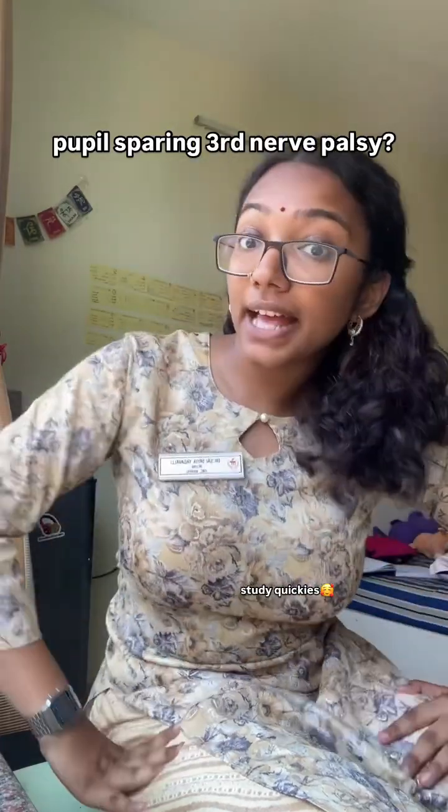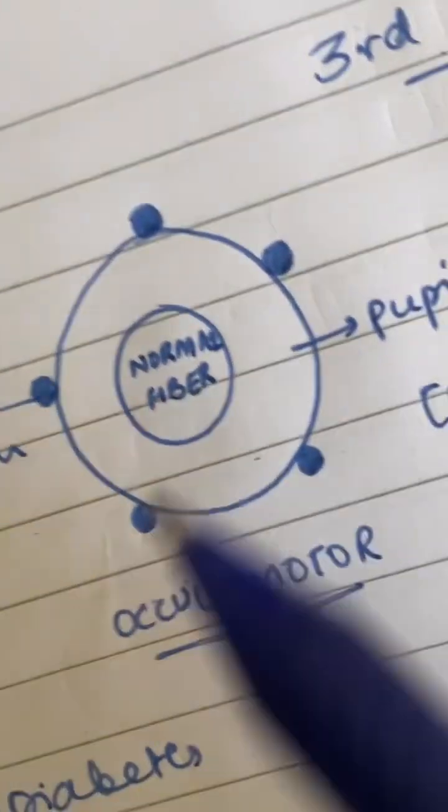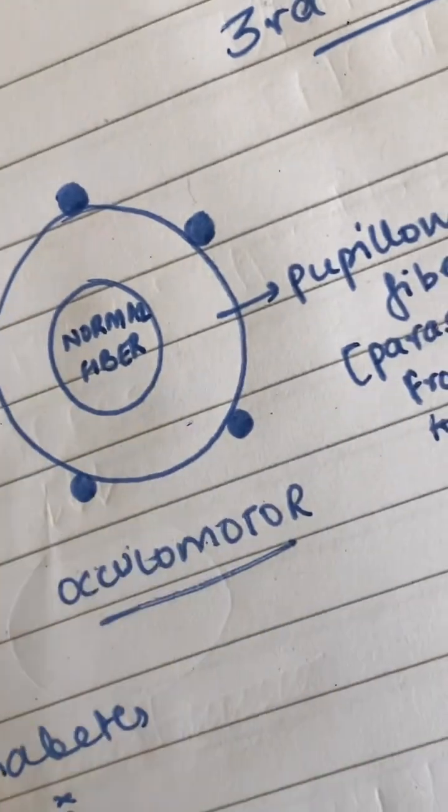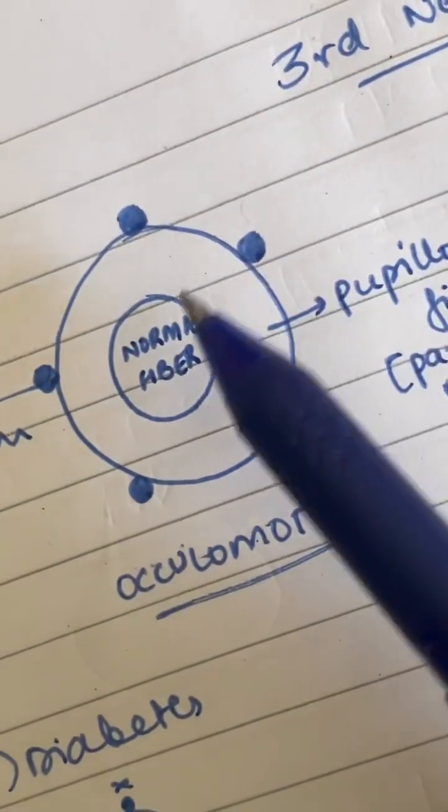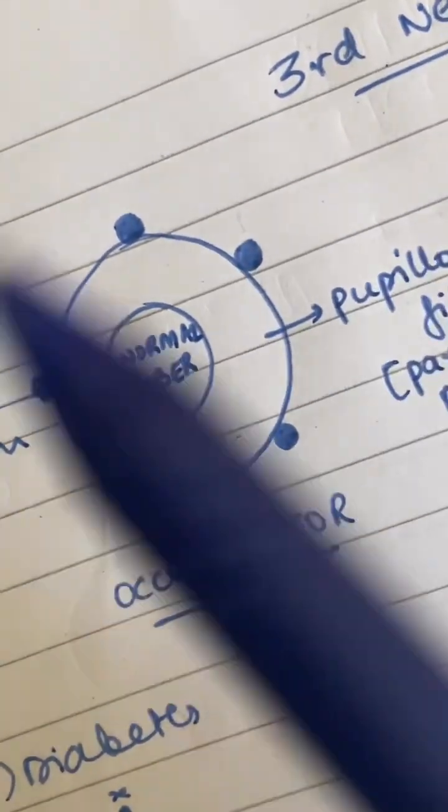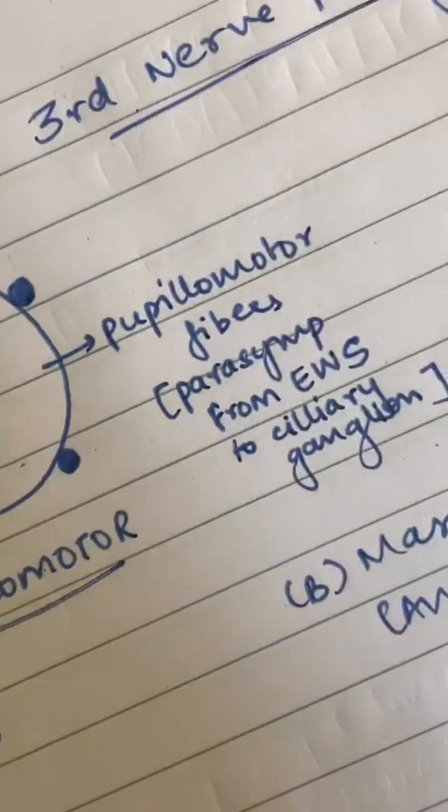What do you mean by pupil sparing third nerve palsy? Let us learn. That is your oculomotor nerve, and the oculomotor nerve has two functions. Number one, the normal fibers which cause the movements of the eyeball. Second, we